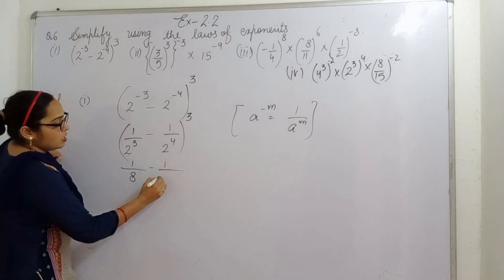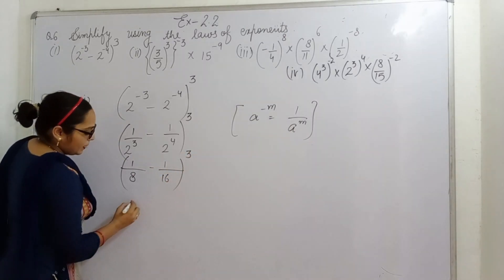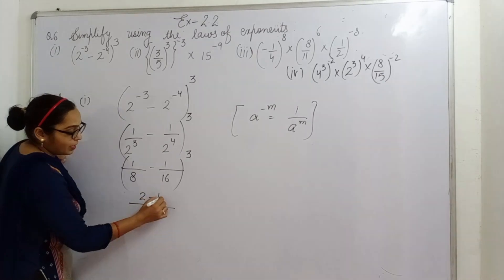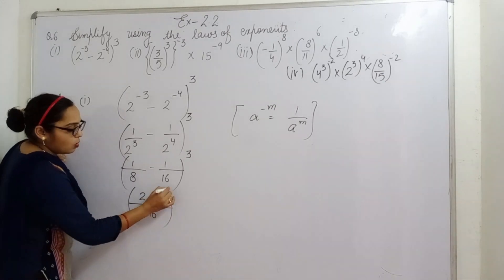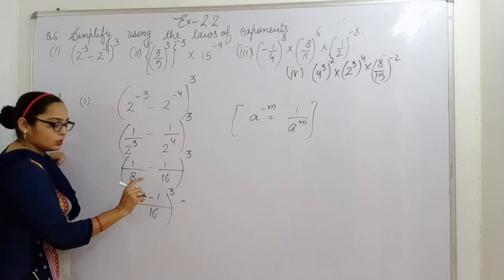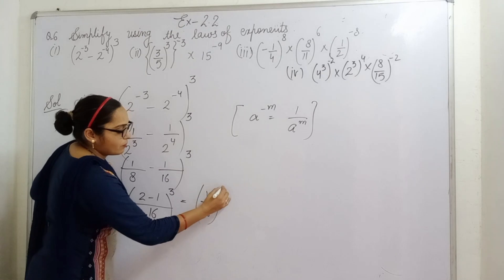Now it is 16 whole power is 3. Now take LCM 2 minus 1 whole power is 3. LCM kya aayega? 2 minus 1 divided by 16. That is 1 by 16 raised to power 3.